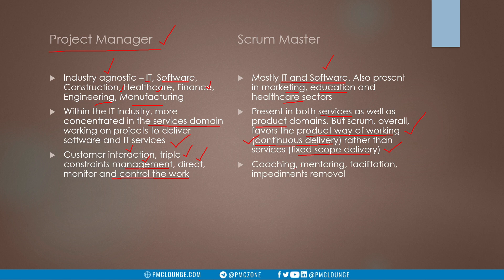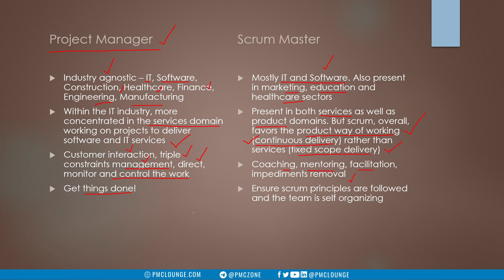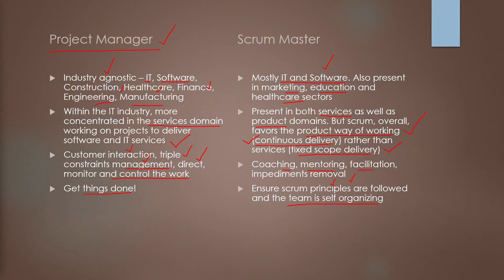But as a scrum master, what you are supposed to do is coach, mentor, facilitate, and remove any impediments that the scrum team faces. A project manager essentially gets things done, but a scrum master ensures that scrum principles are followed and the team is self-organizing. As a project manager you are directing the team and monitoring their work, but as a scrum master you ensure the team understands scrum principles and values, and organizes itself — because a scrum team is a self-organizing team.